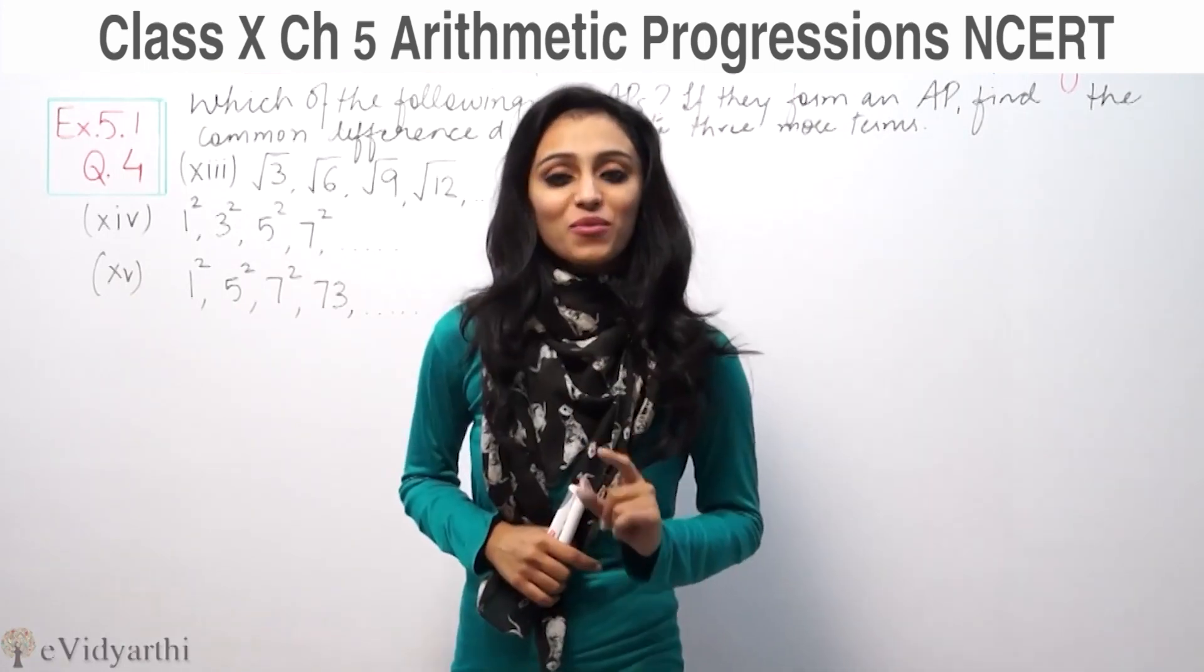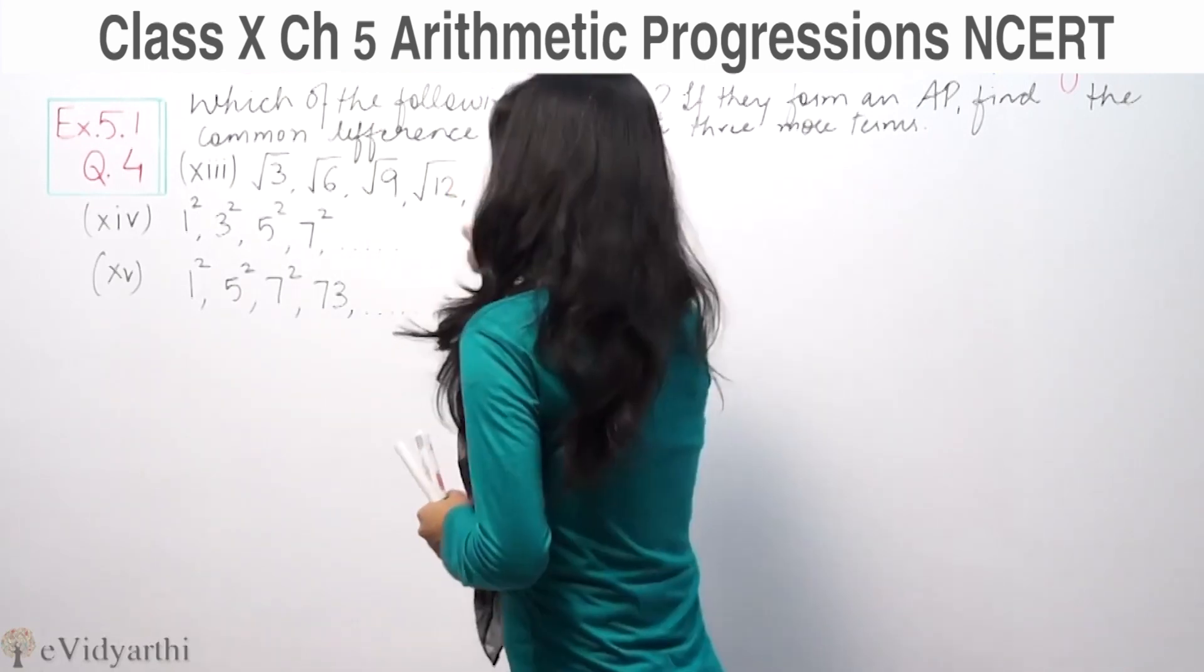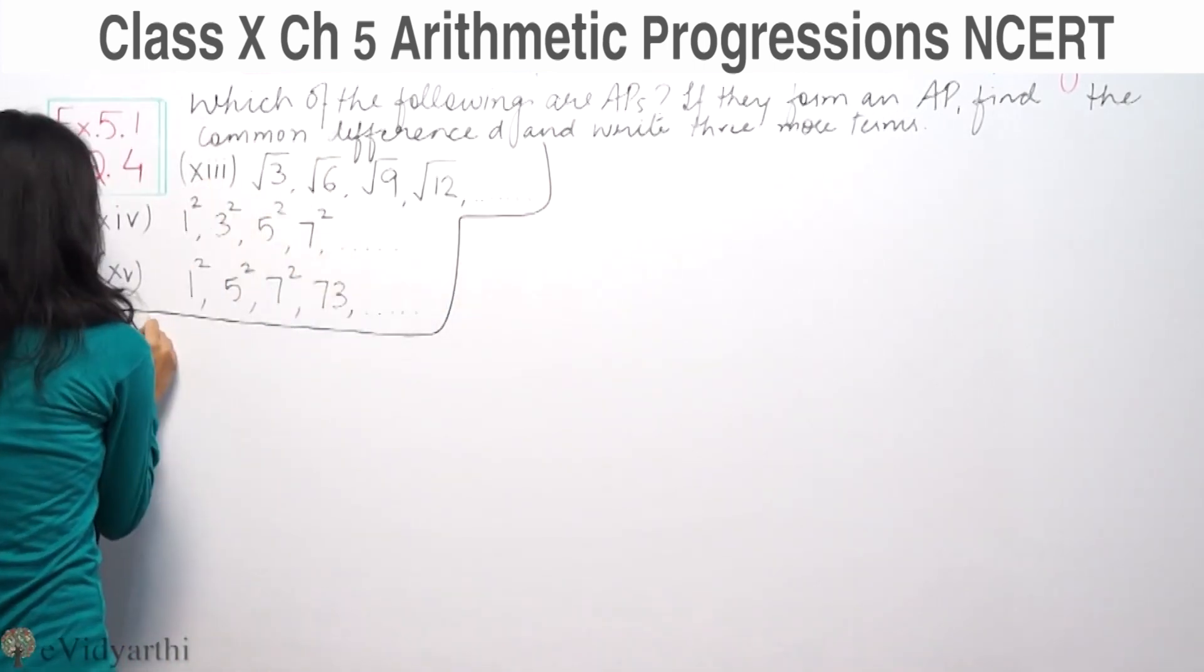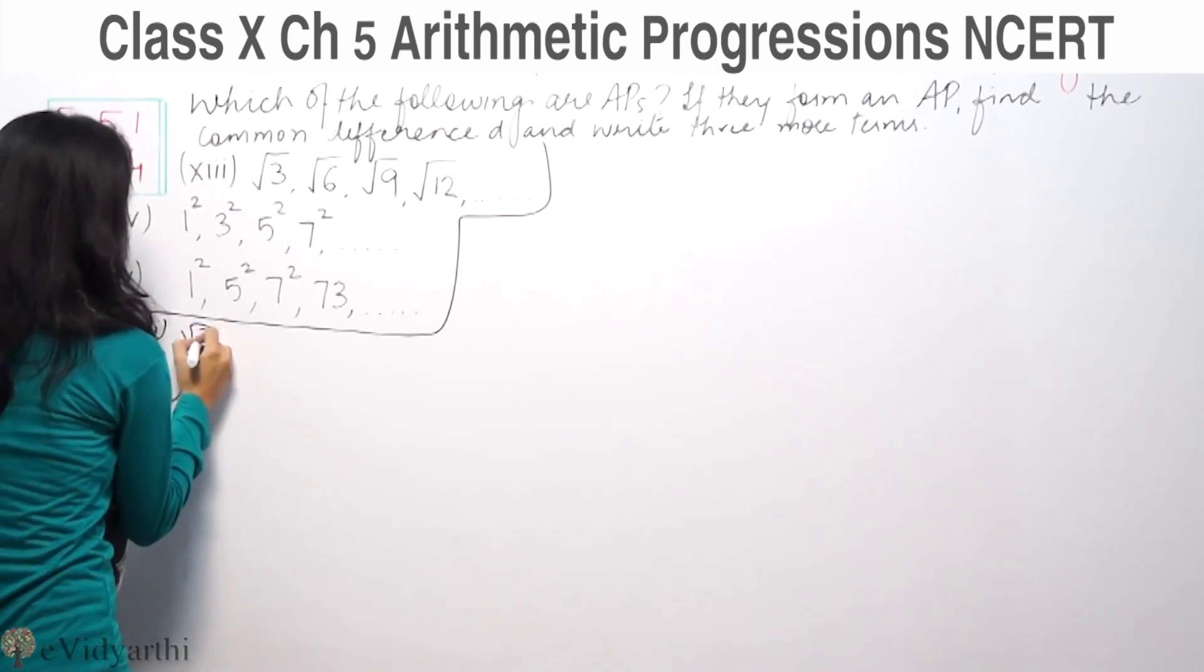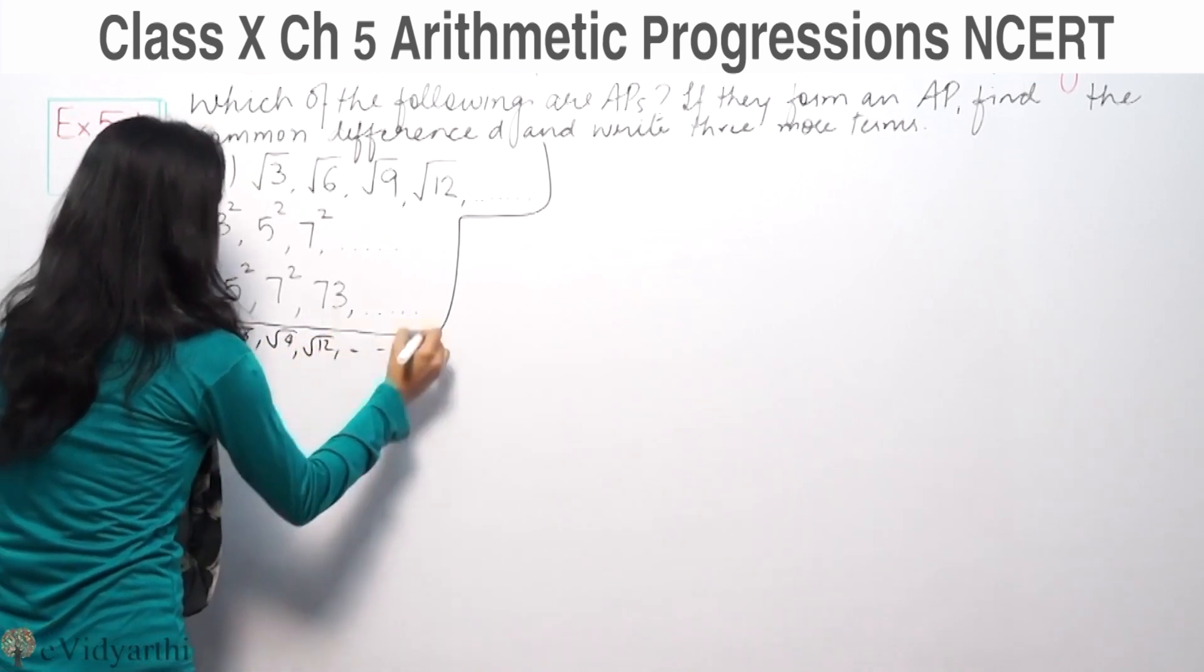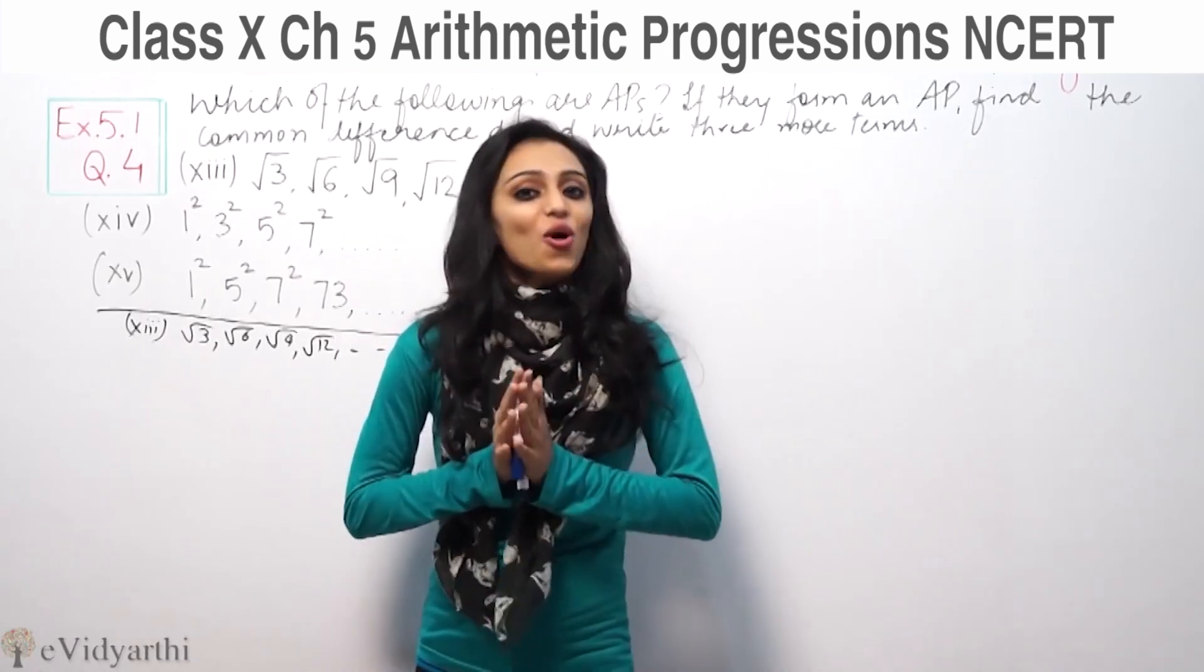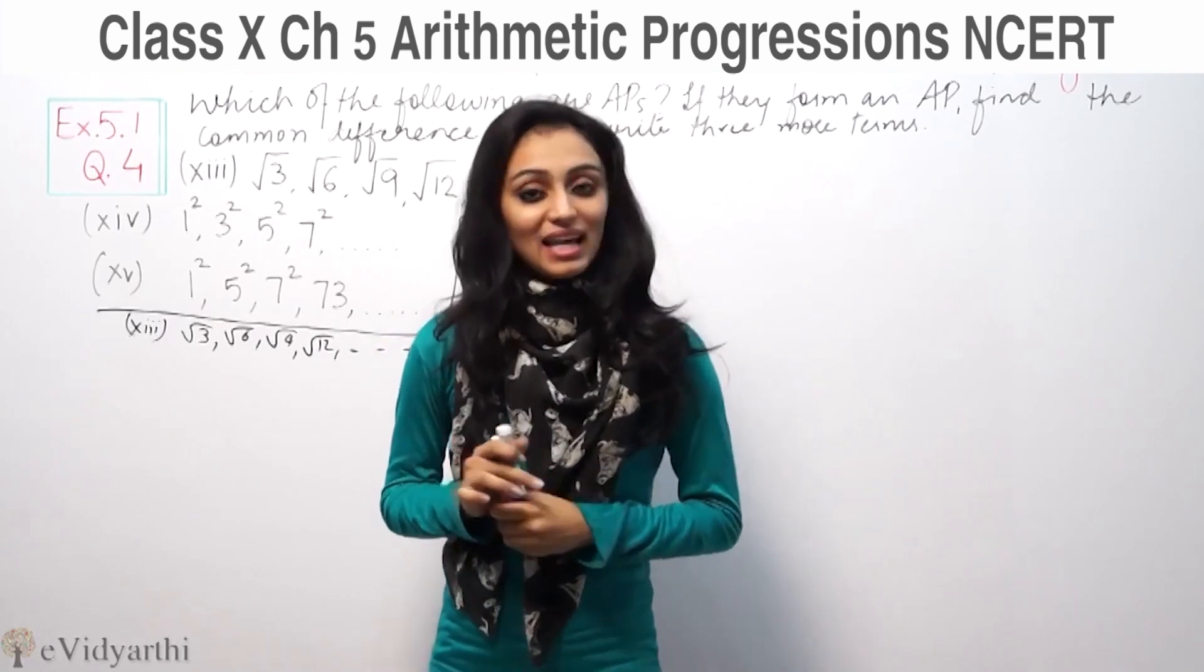First, let's check the question in the first part. Does it form an AP or not? So let's check that first. Part number 3: root 3, root 6, root 9, root 12. Now let's check if it forms an AP. What do we need to check? Common difference. If common difference is same, then series forms an AP. Otherwise, no.